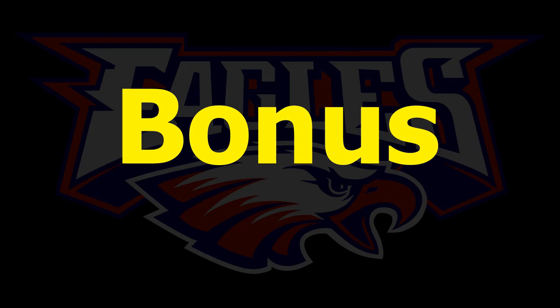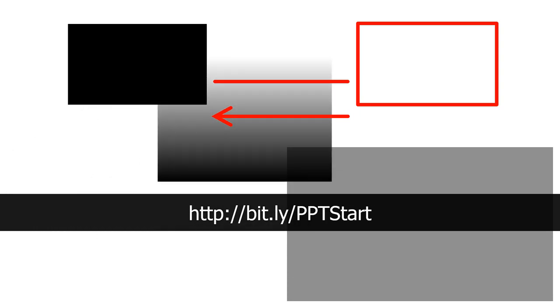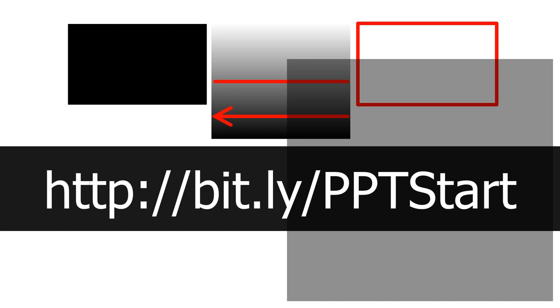Here's a bonus: I use rectangles, gradient rectangles, and slightly transparent rectangles so much that I made a presentation years ago with examples of all of them. Whenever I start a new PowerPoint I always go to that presentation and copy that slide to my current new presentation. Then if I want to create a gradient background, a slightly transparent background, or add text inside a box, I can just copy and paste those elements into my current presentation. If you go to the URL shown, you can download a copy of this PowerPoint for yourself.